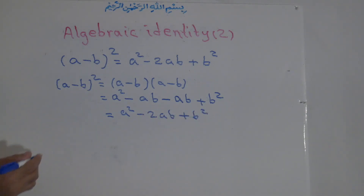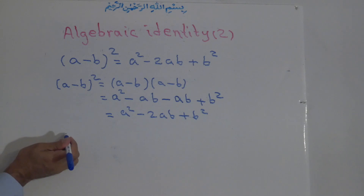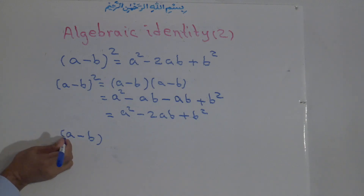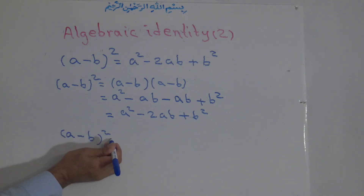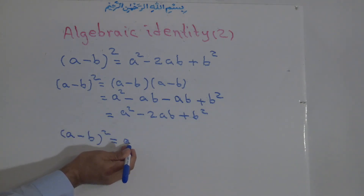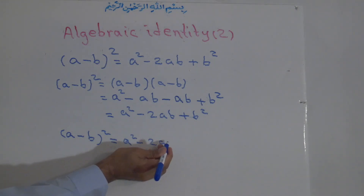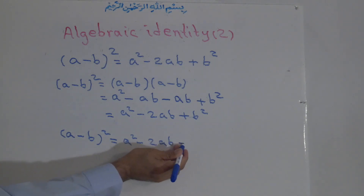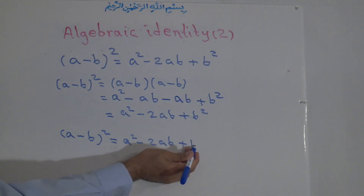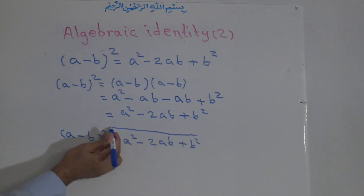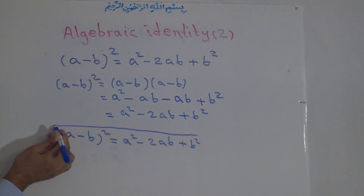From here we find that a minus b to the power of two is equal to a to the power of two minus 2ab plus b to the power of two. This is identity number two, one of the algebraic identities.